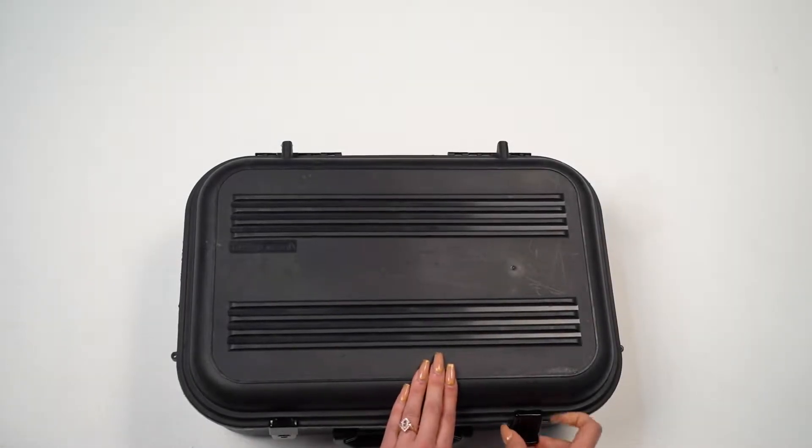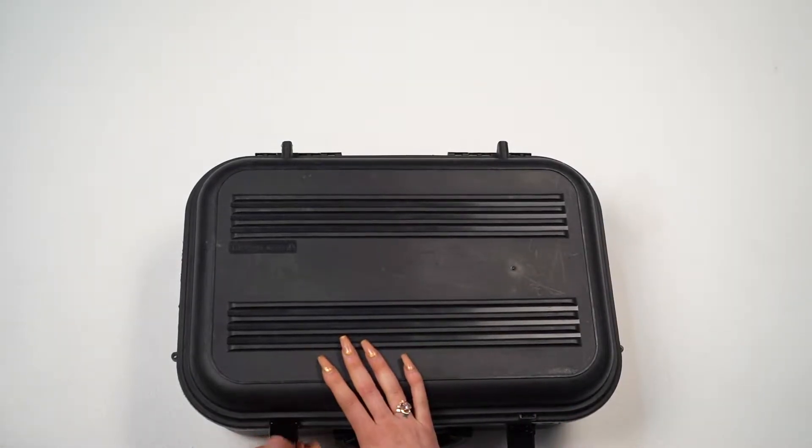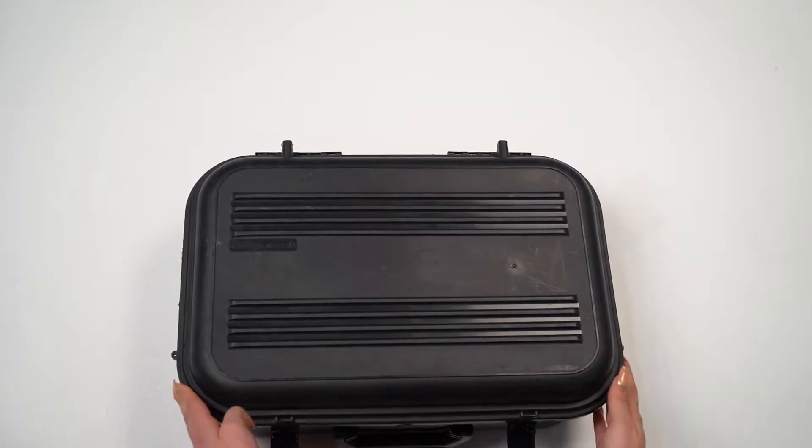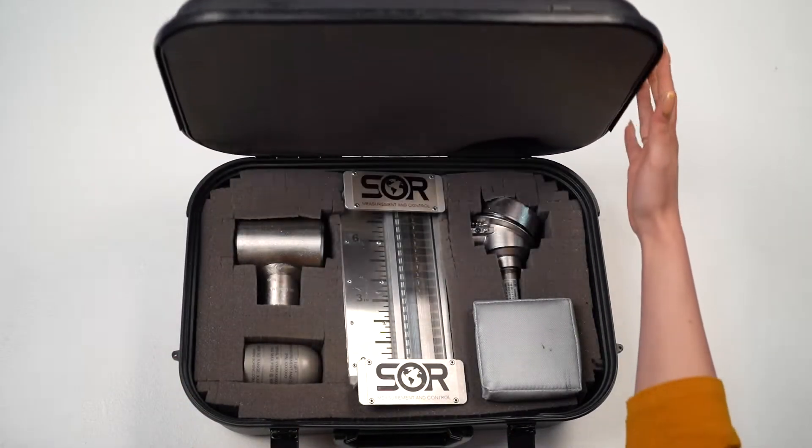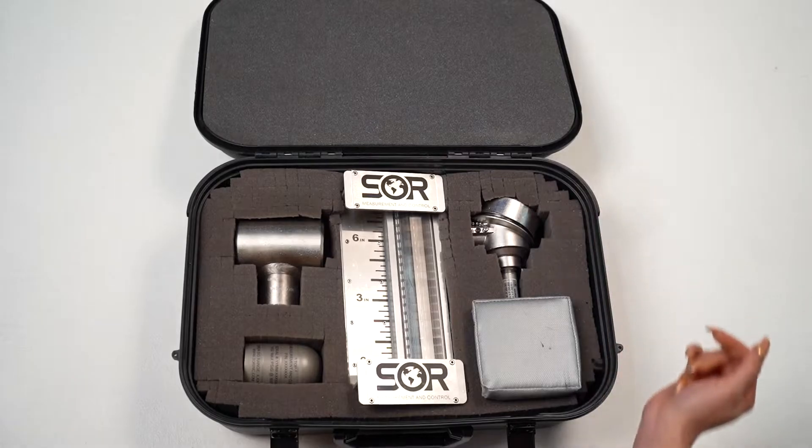The SOR 1100 Series Magnetic Level Indicator is one of our most popular and outstanding products that differentiates us from competitors due to its unique design, so it makes sense you would want to understand its components.